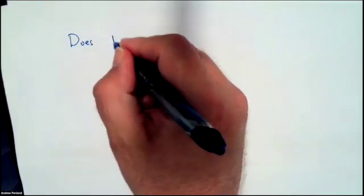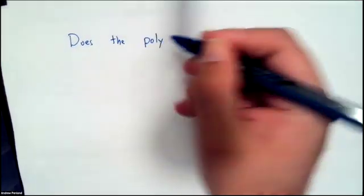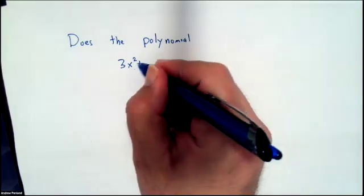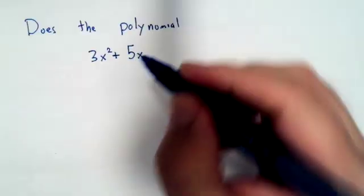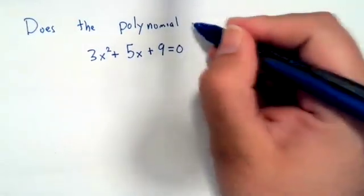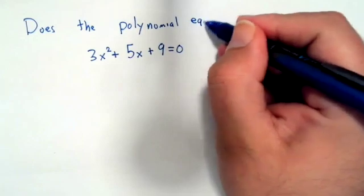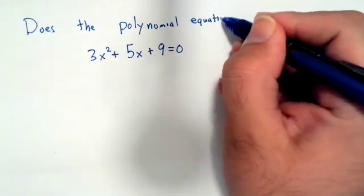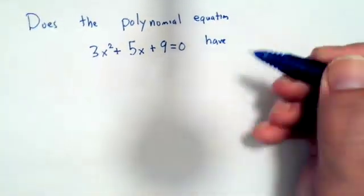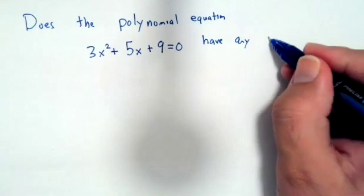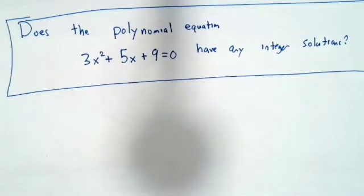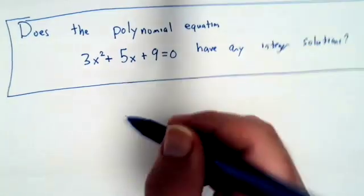Let's answer the question: does the polynomial equation 3x squared plus 5x plus 9 equals 0 have any integer solutions? The answer is no.